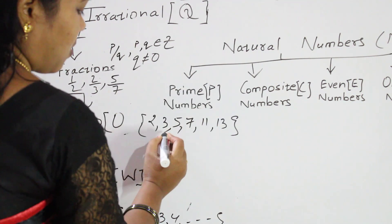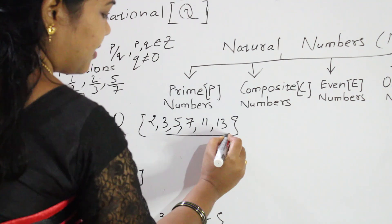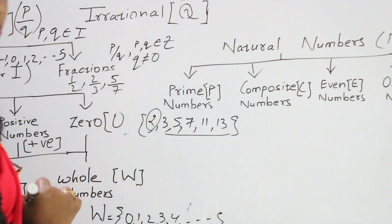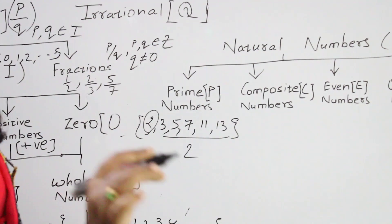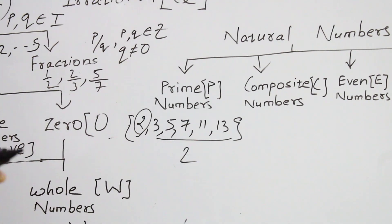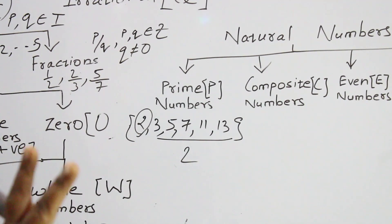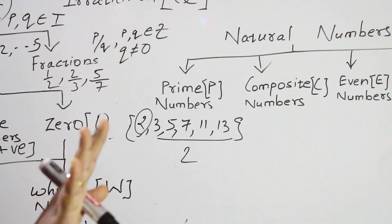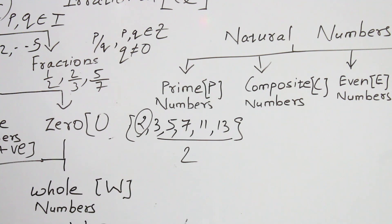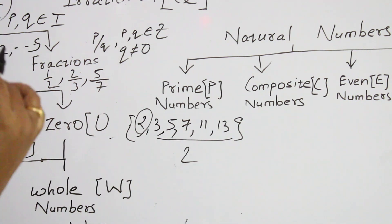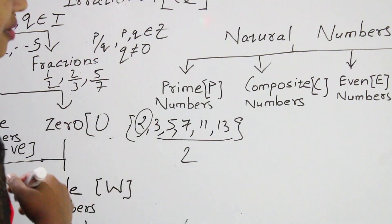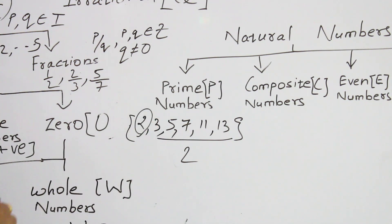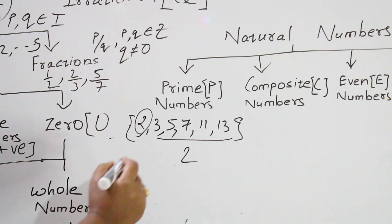You see friends, all the prime numbers are odd except 2. Why? Because 2 is the only even prime number. Remaining all prime numbers are odd. This is a frequently asked question — the only even prime number is 2. The smallest even prime number is 2. The smallest odd prime number is 3.